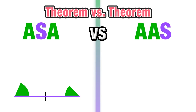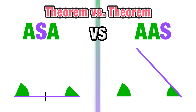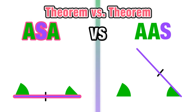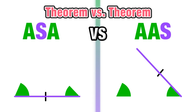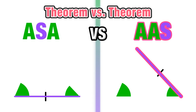Angle-angle-side has two congruent angles, but in this case they are consecutive and the side comes after them — two congruent angles in a row and then a side. Take a second to visualize this so you don't confuse these two theorems. They both have two angles and one side, but it's the location of the side that will help you determine which theorem to use.